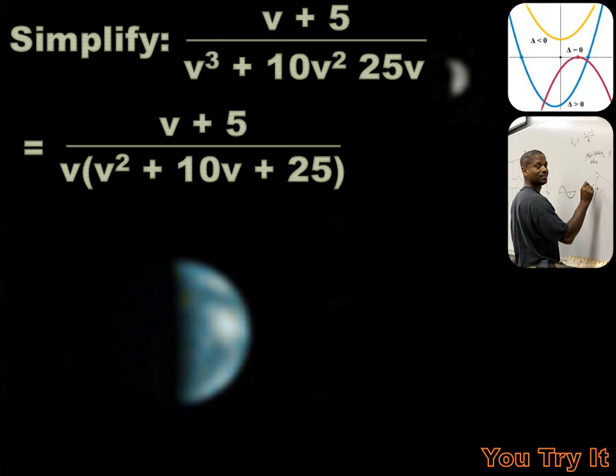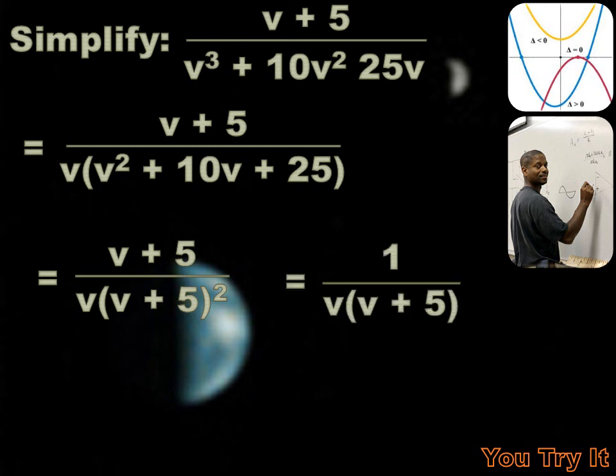Now I bet I could factor that v squared plus 10v plus 25. And I can, it equals v plus 5 squared. So I can rewrite the expression as v plus 5 over v times v plus 5 squared. Well, now I have a common factor in my numerator and my denominator and I can take those out and rewrite this as 1 over v times v plus 5. And I can simplify that further as 1 over v squared plus 5v.